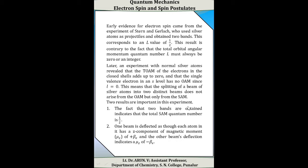They obtained the value one-half, which is a half-integer. Later, the same experiment with normal silver atoms revealed that the total orbital angular momentum of the electrons in a closed shell added up to zero, so that the single valence electron in the s-level has no orbital angular momentum since its value of l is equal to zero. This means that the splitting of a beam of silver atoms into two distinct beams does not arise from orbital angular momentum but only from the spin angular momentum.